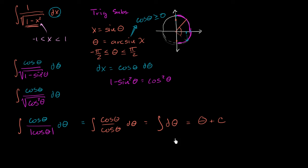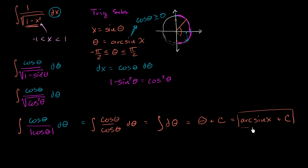Now we just unwind the substitution. We already know that theta equals arcsin of x, so the answer is arcsin(x) plus C, and we're done. Using trig substitution, we were able to evaluate this indefinite integral. Another way to think about it: we've figured out that the derivative of arcsin(x) is 1 over the square root of 1 minus x squared, since taking the antiderivative of that expression gives arcsin(x) plus C.